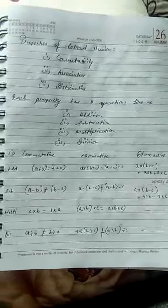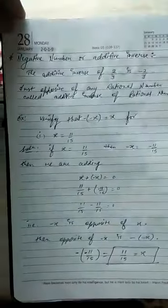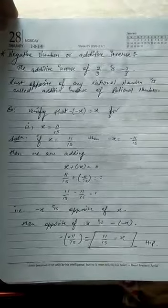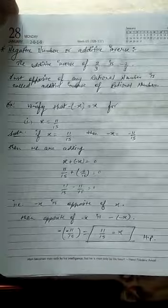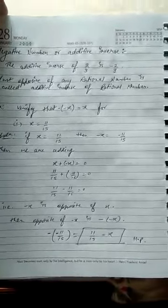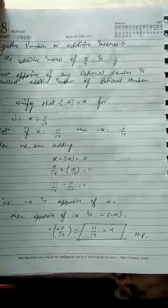After discussing properties with some examples, let's move to the next topic: negative numbers or additive inverse. The additive inverse of 2 upon 3 is minus 2 upon 3. This means just the opposite of any rational number is called the additive inverse of a rational number. Like minus 2 upon 3, its additive inverse is 2 upon 3.